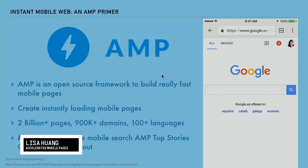AMP is actually an open source project initiated by Google. The goal, or the mission of it, is to create instantly loading, lightning-fast web apps. Over the last two years — it was launched first in 2015 — there are actually over 2 billion AMP pages right now running in the wild, spread across 900,000 domains and over 100-plus languages. That's quite a huge uptake for a project that has only been around for two years.